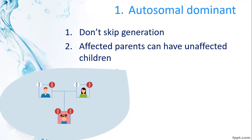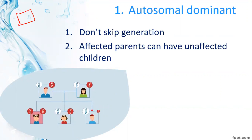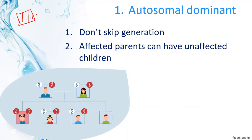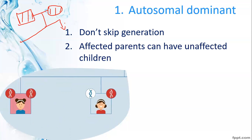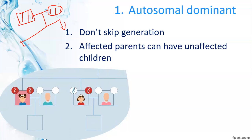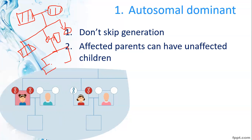Second rule for autosomal dominant: affected parents can have unaffected children. If the parents are affected but carry a heterozygous dominant allele, some offspring may be unaffected. This recessive character can appear in the next generation. When offspring express the character, it can pass through first and second generations.